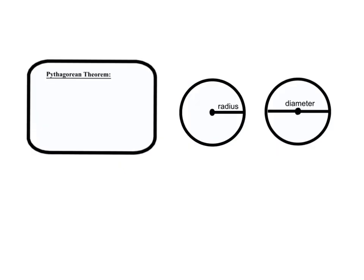Remember, the formula for the Pythagorean Theorem is a squared plus b squared equals c squared, and it can only be used for right triangles. The diameter is the distance across the circle, and the radius is half of that distance.